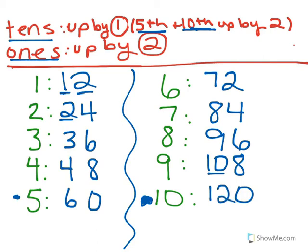That is the simplest strategy I can think of to help you find multiples of 12. Just remember: the ones place is easy — it always goes up by two. For the tens place, you go up by one each time, except for the pesky 5th and 10th multiples which go up by two. Hopefully that helps you understand how to find the multiples of 12!